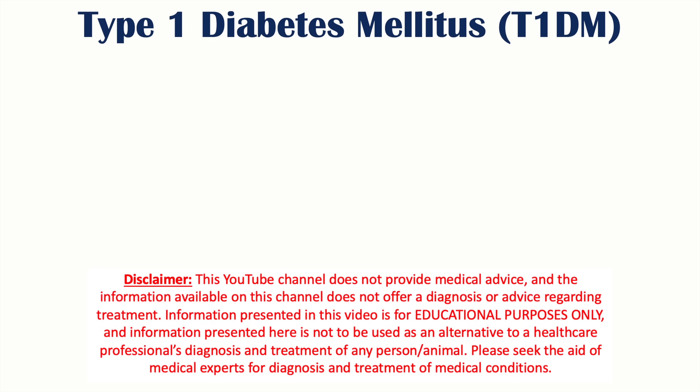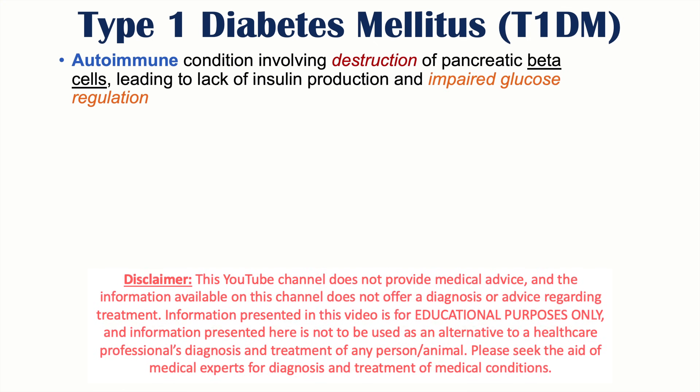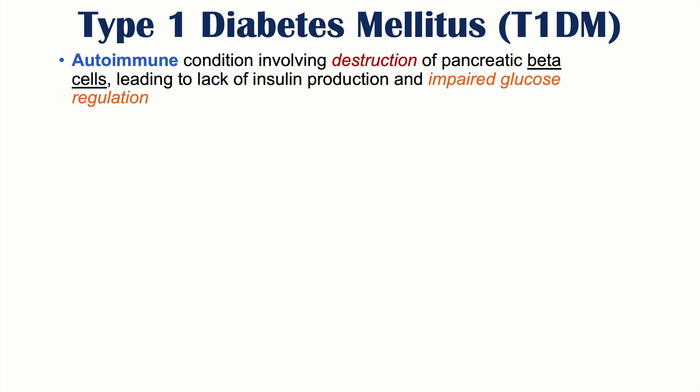Hi everyone. This lesson is on the signs and symptoms of type 1 diabetes. Before we get into the signs and symptoms, let's talk about what type 1 diabetes is. Type 1 diabetes is an autoimmune condition involving destruction of pancreatic beta cells that leads to a lack of insulin production and impaired glucose regulation.